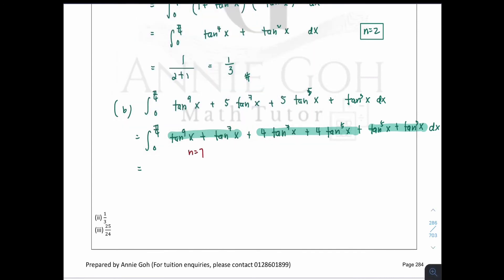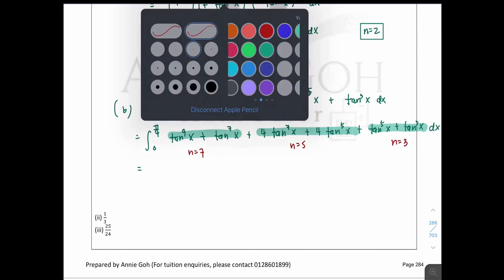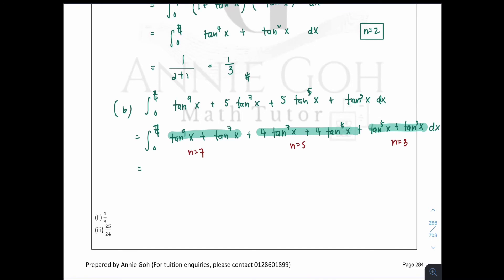For the first pair, n = 7, giving 1/(7+1) = 1/8. For the second pair, n = 5, and factorizing the four gives 4 × 1/(5+1) = 4/6. For the third pair, n = 3, giving 1/(3+1) = 1/4. Combining all pairs gives the final answer of 25/24.